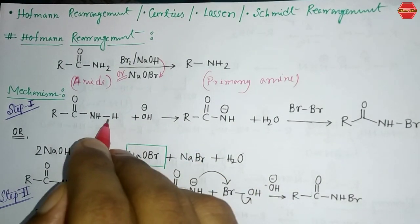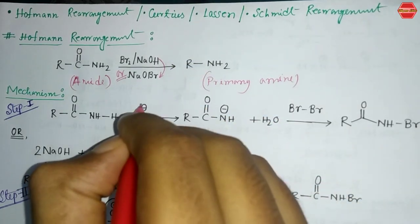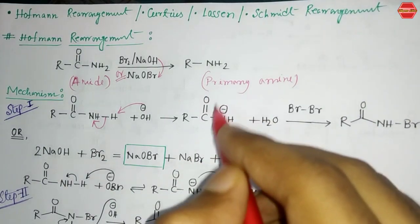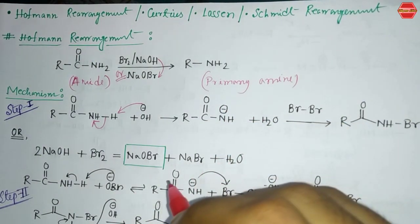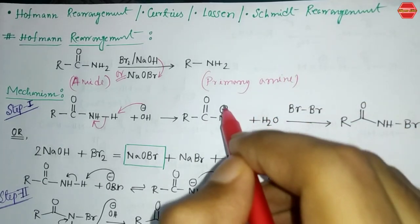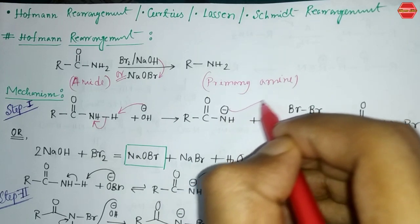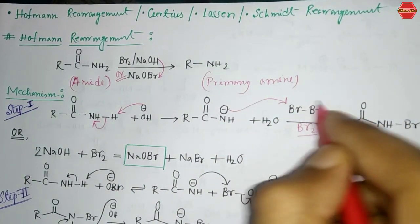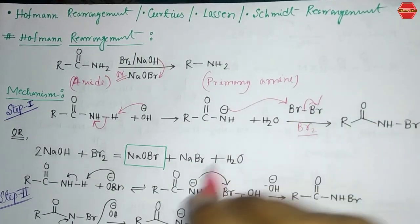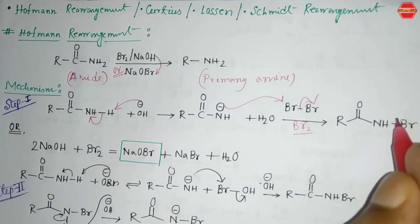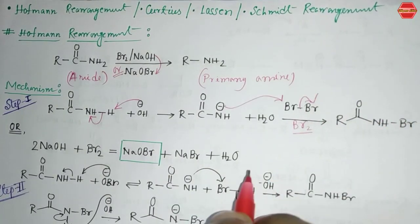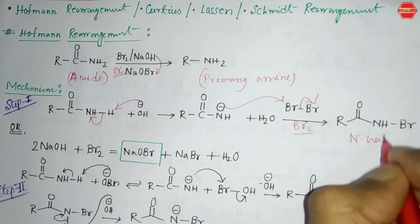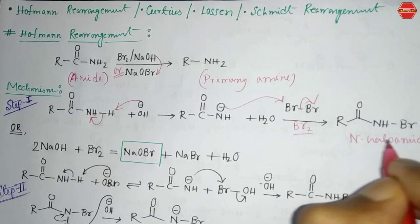In step one, we have the NH₂ group. The base in the medium can abstract a proton from here, and electrons go to the nitrogen side, giving a negative charge on nitrogen. This negative charge directly attacks Br₂, and Br⁻ leaves the system. The product formed is called an N-halo amide.